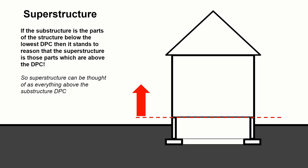So if the substructure is everything below the DPC, it stands to reason that the superstructure is everything above the DPC. Superstructure would be thought of as everything above the DPC, which could include main house walls, the roof structure, intermediate floors, or indeed anything above that line.